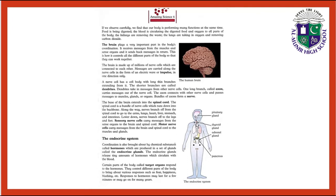The endocrine system — here we have the pituitary gland, thyroid gland, adrenal gland, and pancreas. Coordination is also brought about by chemical substances called hormones, which are produced in a set of glands called endocrine glands. The endocrine glands release tiny amounts of hormones which circulate with the blood. Certain parts of the body called target organs respond to the hormones. They control different parts of the body to bring about various responses such as fear, happiness, and blushing. Responses to hormones may last for a few minutes or go on for many years.